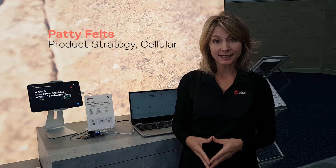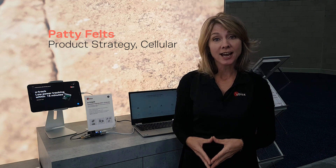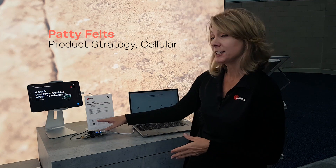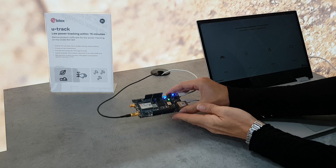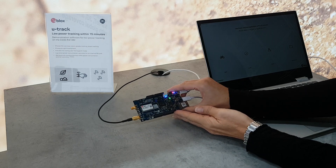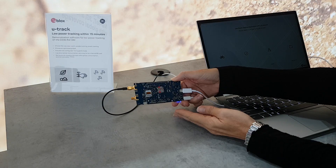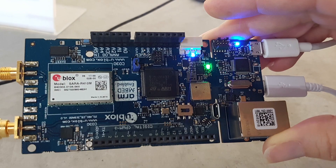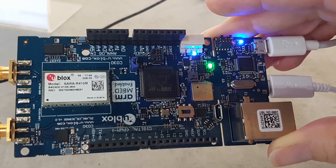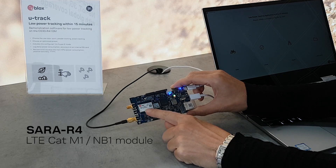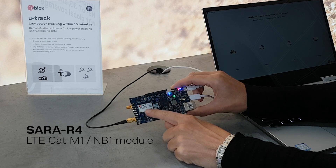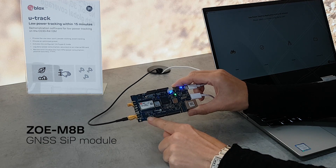Let me introduce you to the C-030 and U-Track. C-030 is just an application board. It's got everything you need for rapid prototyping including the SARA R410 LTE CAT-M1 NB1 device and the ZOE M8B GNSS.